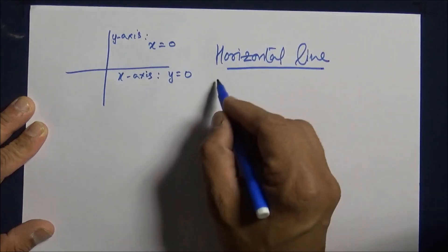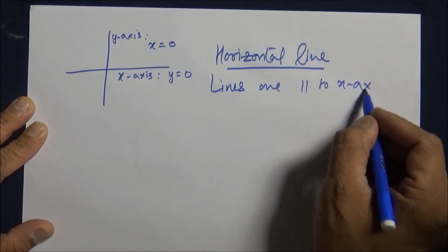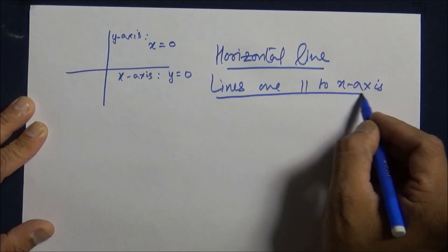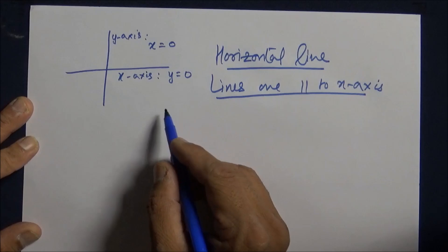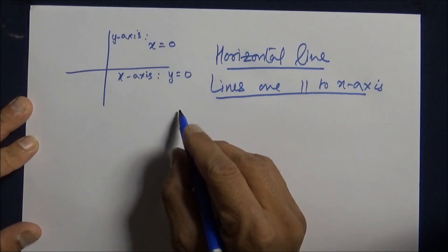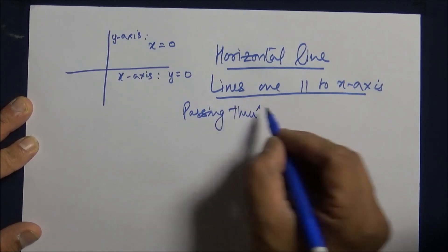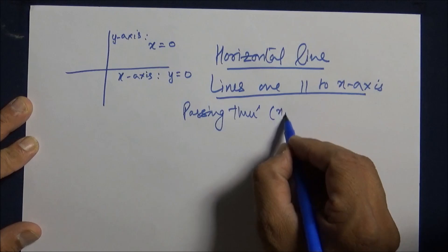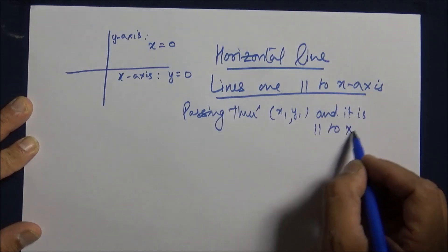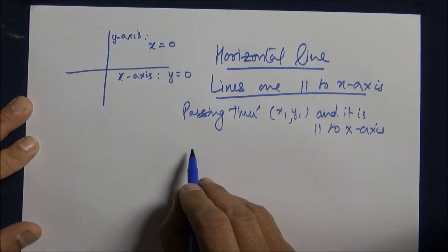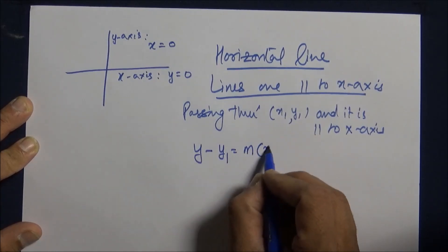Horizontal lines. These lines are parallel to x-axis. Obviously, the slopes of both the lines will be equal. If I assume that there is a line passing through the point (x1, y1) and it is parallel to x-axis, its equation using one point form will be y minus y1 equals m times x minus x1.